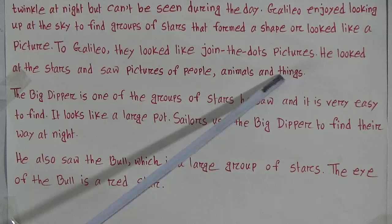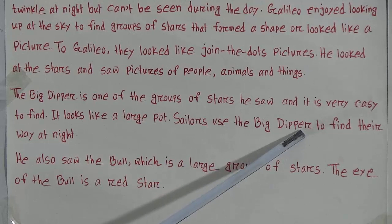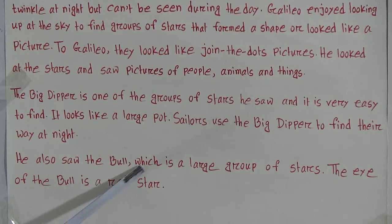The Big Dipper is one of the groups of stars he saw, and it is very easy to find. It looks like a large spoon. Sailors use the Big Dipper to find their way at night. He also saw the Bull, which is a large group of stars.